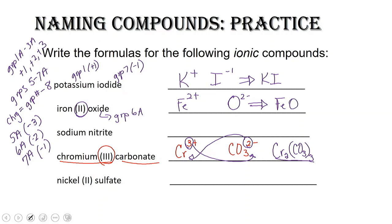Sodium nitrite — sodium is a group 1A element, so it's got a plus one charge. Nitrite — not nitrate, nitrite — you've got to go back to your polyatomic ion table. NO2 has a minus one charge. We've got one of each of those with the same opposite charge, so it's just NaNO2.